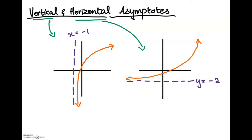Hey everyone, in today's video we're going to be talking about vertical and horizontal asymptotes. Vertical and horizontal asymptotes are basically imaginary lines on a graph where the graph never touches but really gets close to. There are two types: vertical and horizontal. There's also slant, but that's another video. For now we're just going to focus on vertical and horizontal asymptotes.